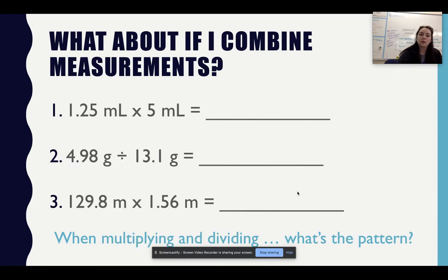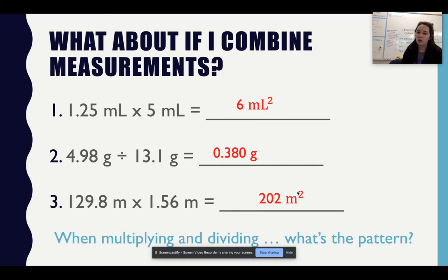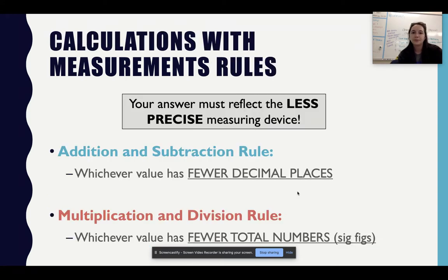What about multiplying and dividing? I get 6 milliliters for my first one, 0.380 grams for the second, and 2.02 meters squared for the last one. When multiplying and dividing, the pattern is to use your least number of significant figures, or sig figs. I'll show you how to determine those. Make sure you write this down: addition and subtraction rule — fewer decimal places; multiplication and division — fewer total sig figs. Your answer must reflect the less precise measuring device.